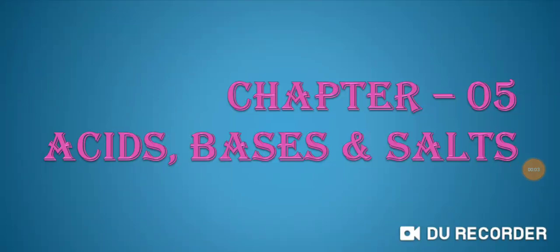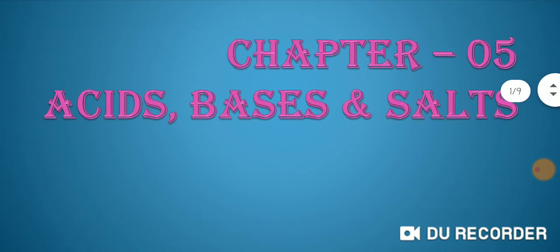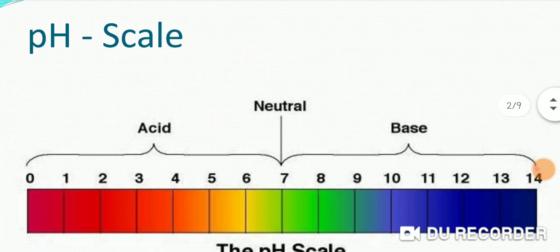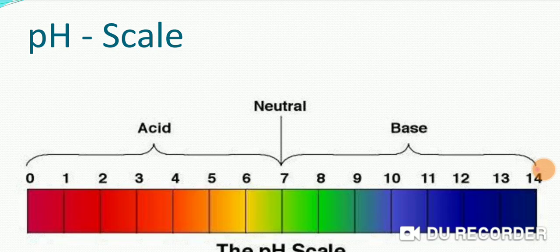Good morning students, today is the time for the new chapter: acids, bases, and salts. Now we will continue this chapter, chapter number five. First of all, I have shown here the pH scale with the values of acid, neutral, and base. You can see the scale is starting from 0 to 14.